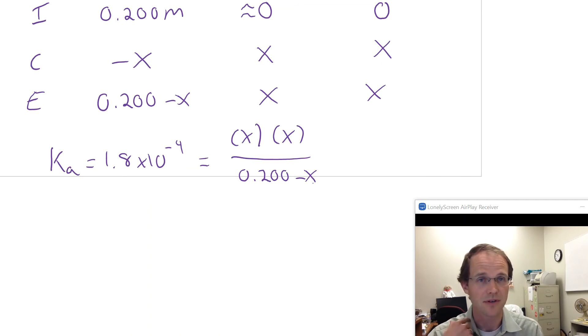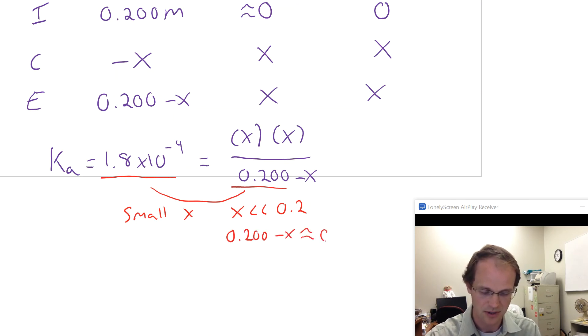We could use the small X assumption in this case, which is probably a pretty good assumption because our Ka value and our concentration are separated by much more than a factor of 100. So we're going to make the small X assumption, which is basically saying that X is much, much less than 0.2. So when we take 0.2 minus X, that's going to be approximately 0.2, and it drops that X out of there and makes our solving easier.